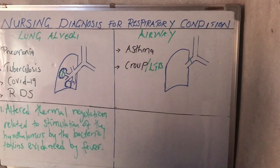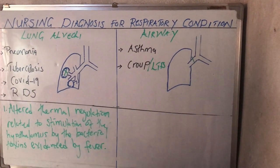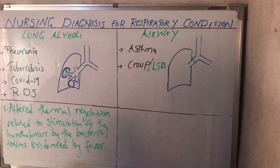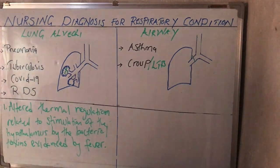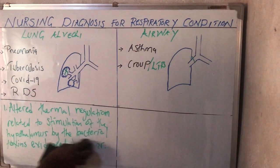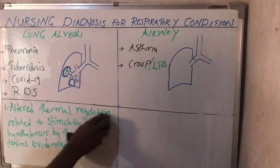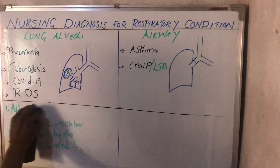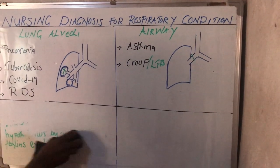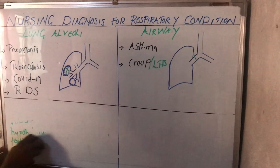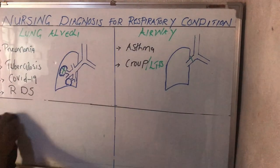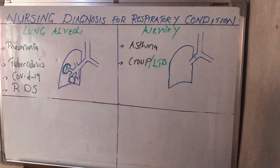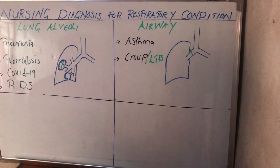That is the second nursing diagnosis under the lung alveoli conditions. The third nursing diagnosis is chest pain. Remember, the patient is going to complain of pain. Even a four-year-old baby can say they're feeling pain inside their chest; a six-year-old, a ten-year-old can verbalize it.